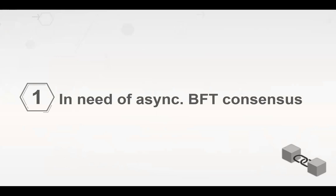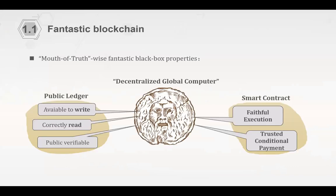For blockchain scenarios, blockchain is a fantastic primitive — essentially a decentralized global computer — through which we can implement a global public ledger. Anyone can write transactions into it, and it can always be correctly read because it is publicly verifiable. With this primitive we can have applications such as smart contracts: a piece of code that is faithfully executed in the decentralized global computer, enabling trusted conditional payment like atomic enforcement contracts.